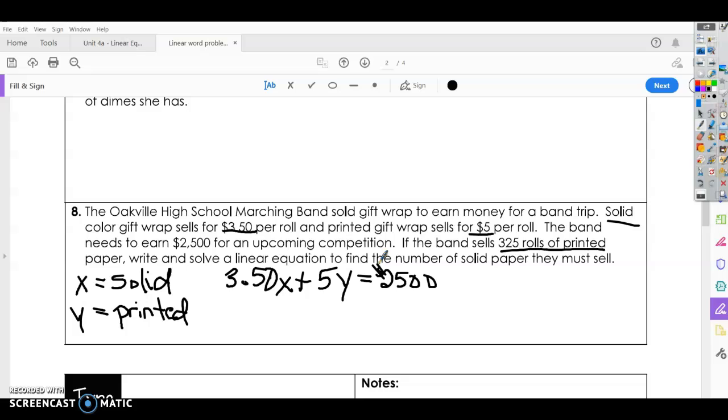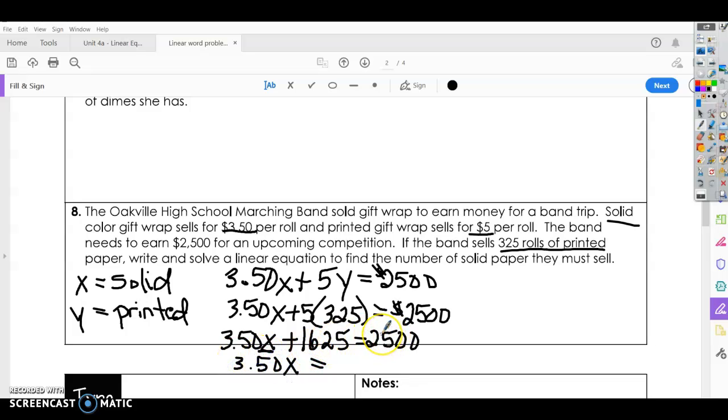Alright, this says that we have 325 rolls of printed paper. Printed is our Y. So let's put $3.50 X plus 5 times 325 equals $2,500. Alright, so 5 times 325, that's going to be $1,625. So all I did was multiply 5 times 325 to see how much that total cost was. I am solving for X, so I need to subtract 1625 from both sides. So I'm going to have $3.50 X equals, after I subtract 1625 from both sides, I get $875 still needed.